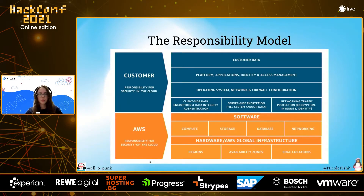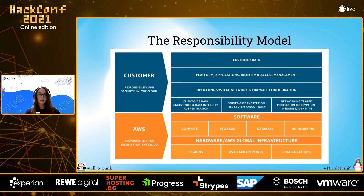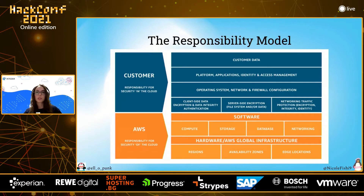We see that there are threats in the cloud targeting us, but there are ways to protect our cloud. Because the cloud can be complex, we have the shared responsibility model. For example, if I have an AWS instance, I'm responsible for all the code running on that instance — making sure it doesn't contain malware or malicious artifacts. AWS is responsible for all the infrastructure that makes my instance exist: the hardware, the software, and so on.